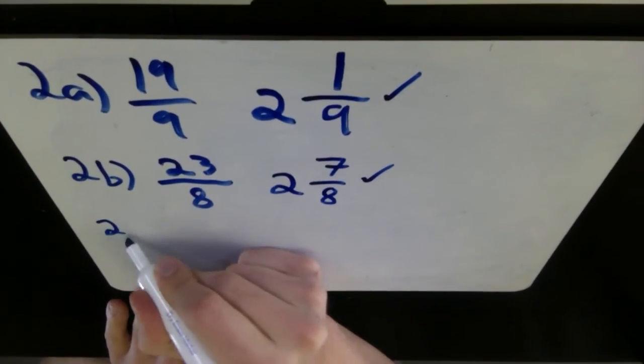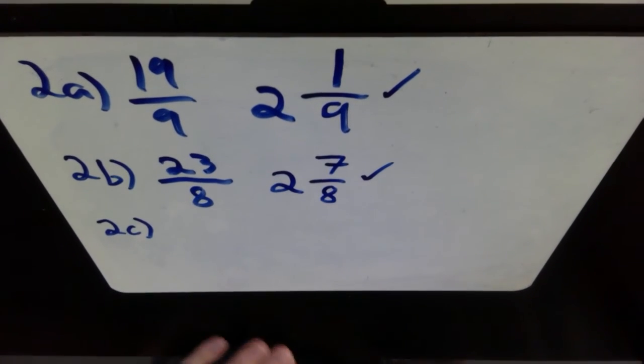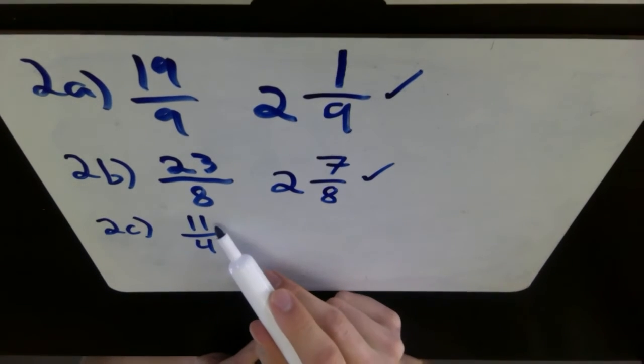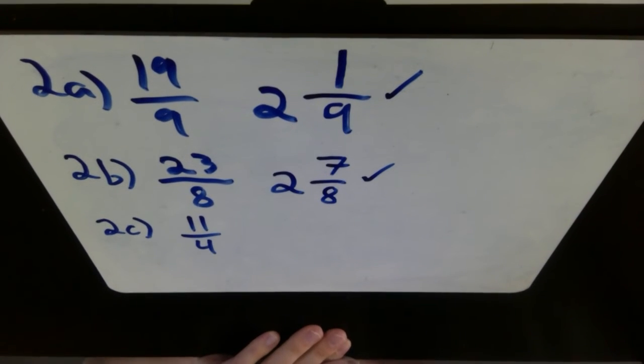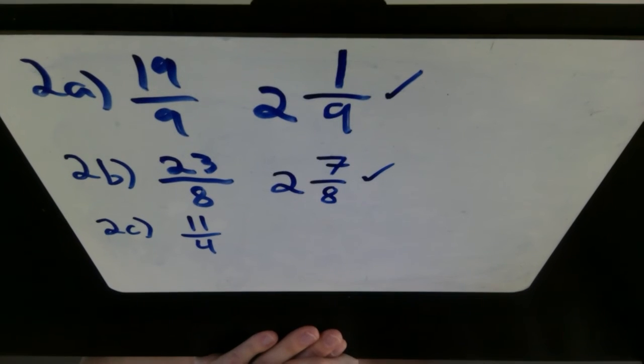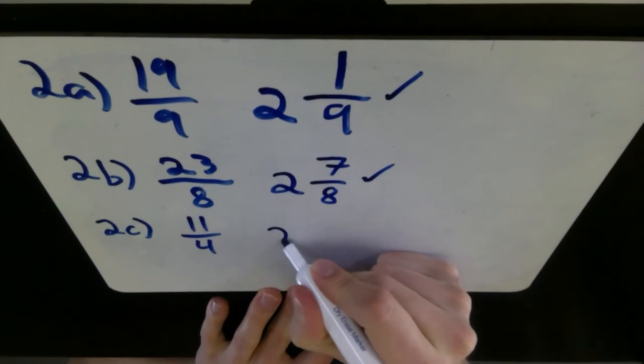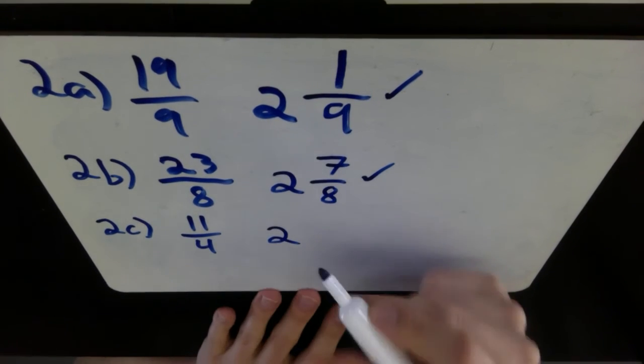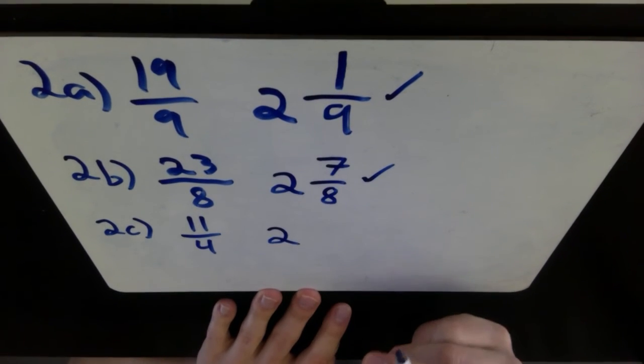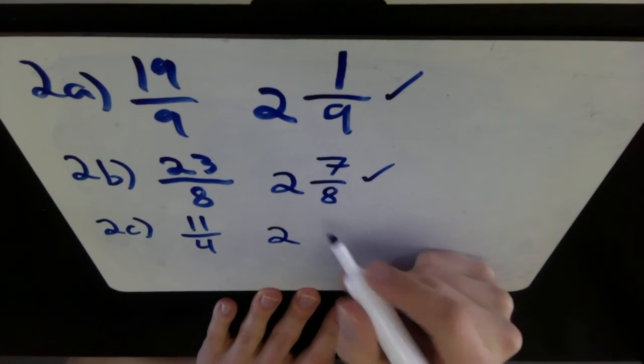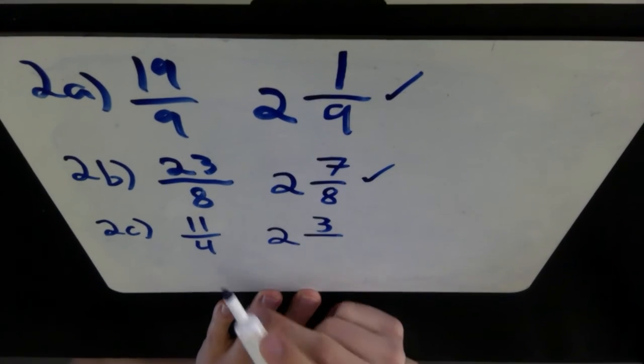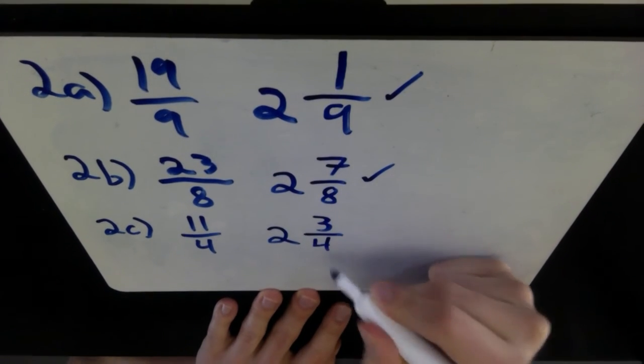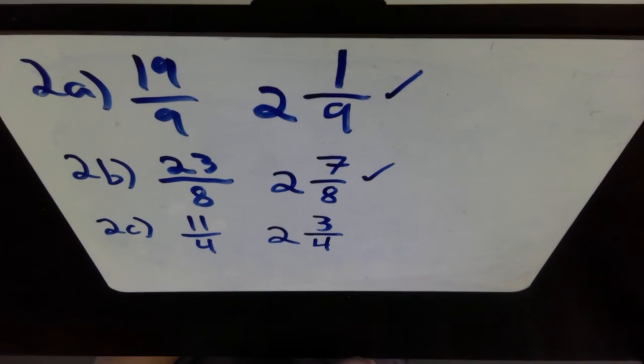2C. We have 11 over 4. Ask yourselves, how many times does 4 go into 11 without going over? So counting up, multiples of 4: 4, 8 goes in twice. What's left over between an 8 and an 11? Well, left over, the difference between 11 and 8 is 3 over top of our denominator, 4, to make our mixed number 2 and 3 over 4. And last one, 2D.